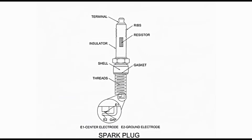Below the gasket, there is a threaded portion of the plug. Matching inner threads are provided in the cylinder head, making it possible to tighten the plug. The lowermost portion of the plug has been enlarged to provide a better view. It has the E1 center electrode connected to the terminal through the resistor, as already mentioned. E2 is the ground electrode, connected to the threaded portion of the plug and earthed through the engine body.